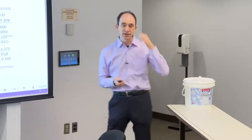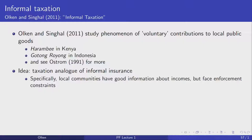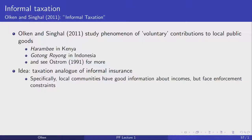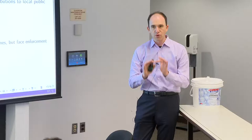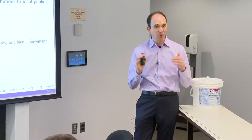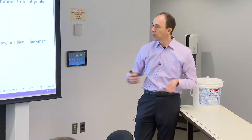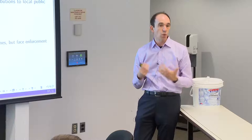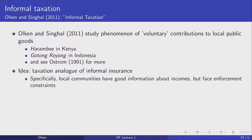One last topic to mention is informal taxation. Just as there are ideas about informal insurance supplementing formal systems when they break down, the same ideas apply to taxation. In local village contexts, people contribute to local public goods through informal mechanisms rather than formal tax systems — for example, voluntary contributions of labor or materials to pave a road, rather than raising taxes and hiring a paving company.